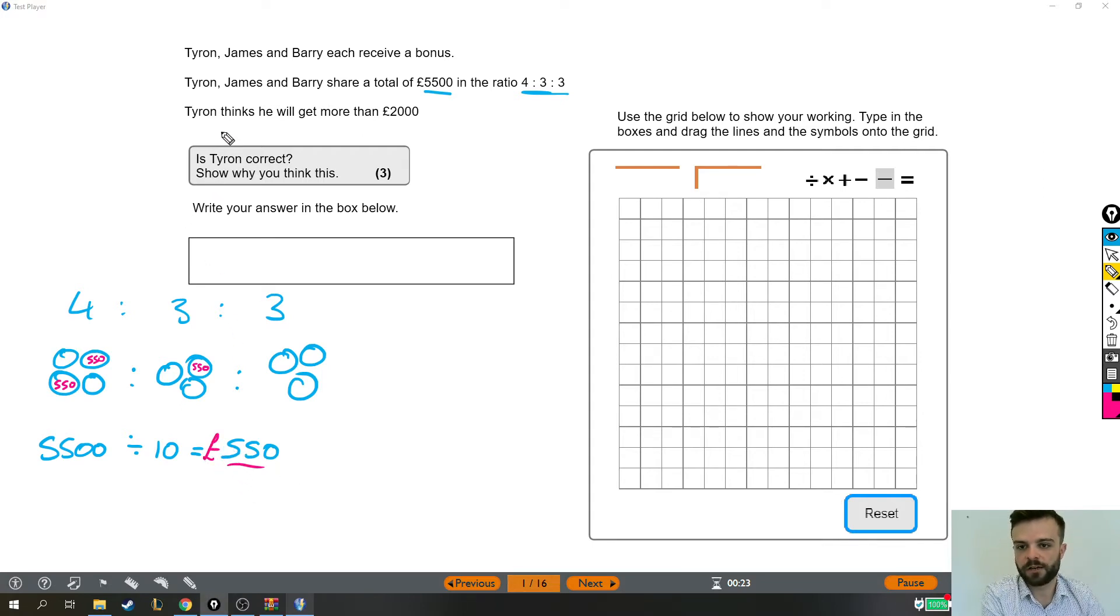And then from there we can work out how much each person would get. Now we're only interested in Tyron, so we're only going to work out how much Tyron gets. He has four parts or four shares and we've worked out that each share is £550. So the next thing we do is take £550 and times it by four. Now there are different ways you can do that. You could add up £550 four times. You could do a grid or a lattice method to multiply those together.